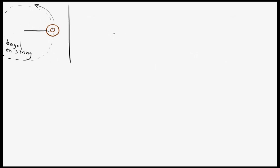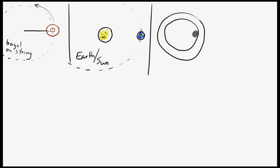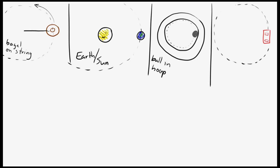Another thing that can travel in a circle is the earth. Technically it's an ellipse, but let's imagine it's a circle — the earth going around the sun. We can also imagine a roll of masking tape placed on a table, with a ball put into the center so it can roll around in that hoop. And lastly, imagine a car driving around in circles in a big parking lot. I'll draw that as seen from above. So four cases: the bagel, the earth, the ball, and the car.